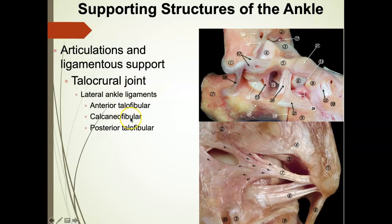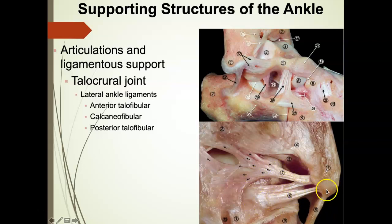Last but not least is the posterior talofibular ligament — PTFL. It's attached posteriorly to the talus and to the distal posterior fibula itself. It's not injured very often because of its anatomical location. In order to injure the posterior talofibular ligament, you'd essentially have to land in a maximum dorsiflexed position or take a blow to the anterior ankle — those don't happen very often, so PTFL injuries are extremely rare.